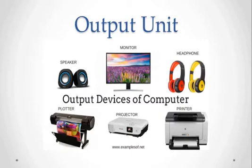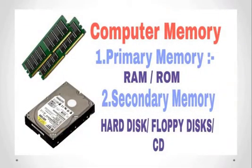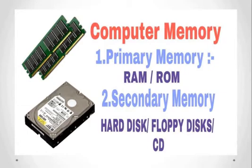Now we will see some important components of a computer. Memory is required to store data. It is further divided into primary memory and secondary memory. Primary memory is known as the main memory. It is usually volatile memory, meaning data is lost if the power is switched off. It is the working memory of the computer, faster than secondary memory. A computer cannot run without primary memory. It is divided into two subcategories: RAM and ROM.